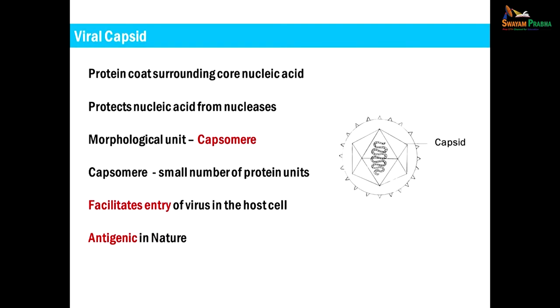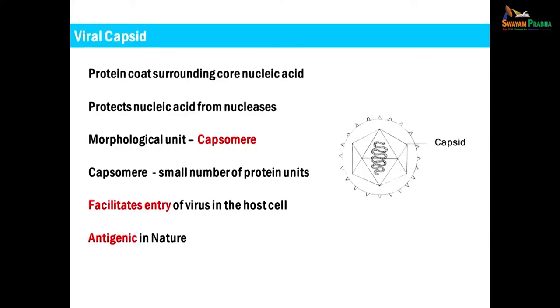The protein coat which surrounds the nucleic acid is known as the capsid. The basic function of the capsid is to protect the nucleic acids from nucleases — enzymes that degrade nucleic acids. The morphological unit of the capsid is known as the capsomere, which is made up of a very small number of protein units. Because of the limited genetic material in viruses, they are parsimonious in their use of genetic information. Another function of the capsid in naked viruses is to get attached to the host cell membrane, facilitating entry. The capsid is antigenic in nature.